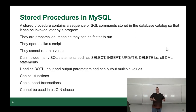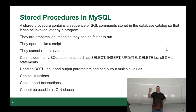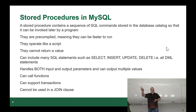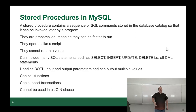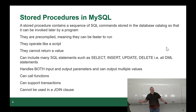An output parameter is a variable you can set partway through the code that gets passed back out, and you can have many of them. If you remember Python functions, how many return values can you have? One thing — you can return a list or array or object, but you're returning one thing. In a stored procedure, you could have four inputs and four outputs and set the output values at any point inside the stored procedure. It can call functions, it can support transactions. However, a stored procedure cannot be used in a join clause because it's not a table.